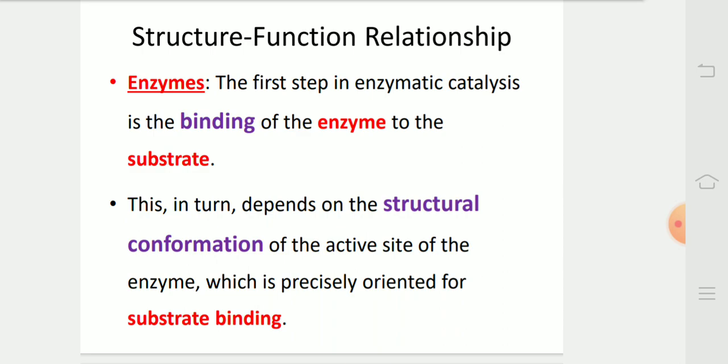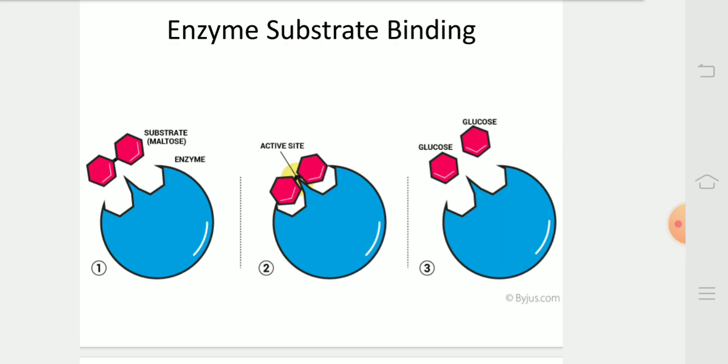Enzymes. The first step in enzymatic catalysis is the binding of enzyme to the substrate. This, in turn, depends on structural conformation of the active site of the enzyme, which is precisely oriented for substrate binding. In this diagram, we can see that substrate binding is accurate to the enzyme so that it can break into two molecules.